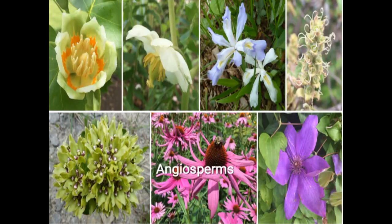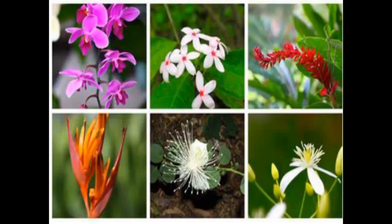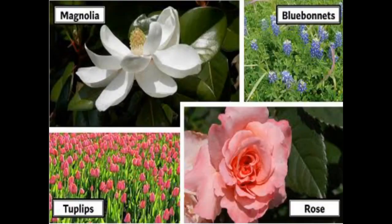Angiosperms are the plants that produce flowers and bear their seeds in fruits. Angiosperms are flowering plants and bear covered seeds. Examples of Angiosperm plants are Magnolia, Bluebonnets, Tulips and Rose.